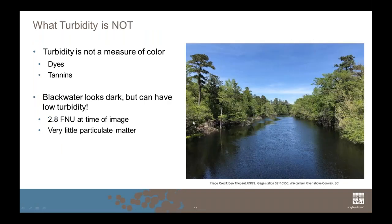What is turbidity not? Turbidity is not a measure of the color of water. Colors can be introduced by dye studies or from tannins leaching into the water as surrounding vegetation decays. This image shows a Blackwater River in South Carolina — the river is literally black due to dissolved materials, but there's very little particulate matter. At the time this image was taken, turbidity was only 2.8 FNU, which is very low.